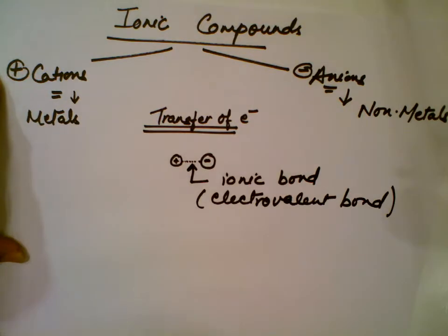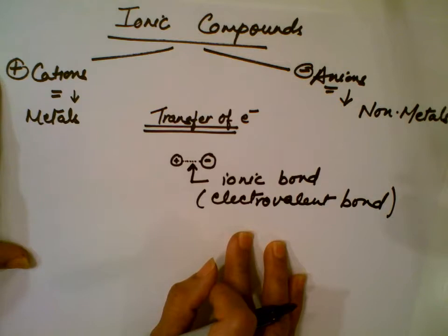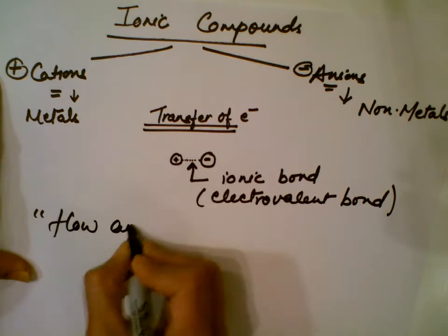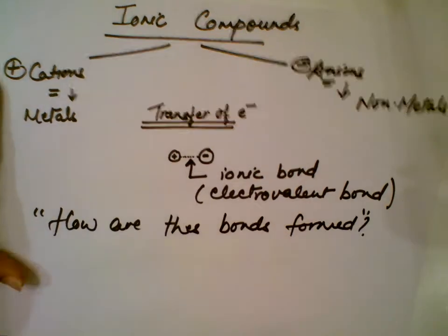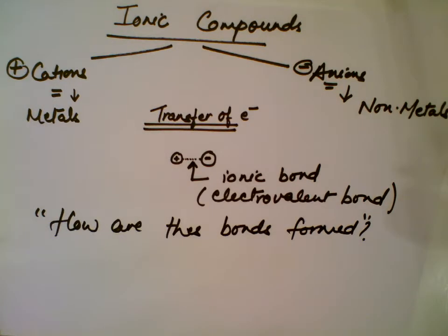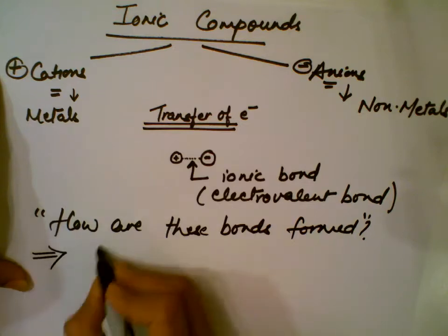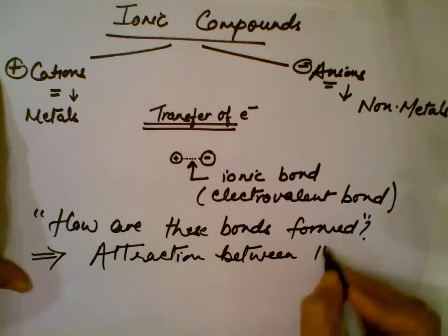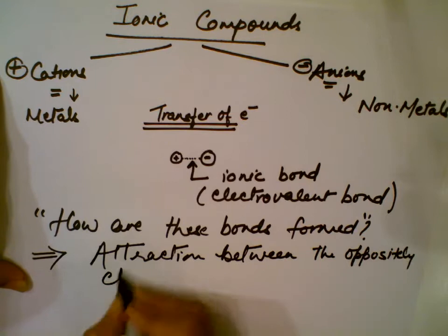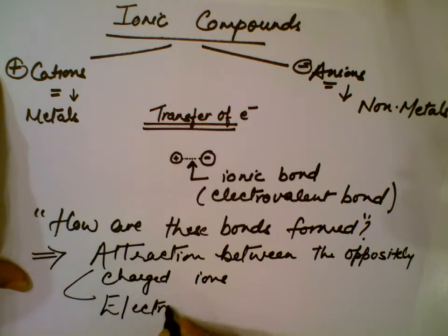How are these ions bonded, and what type of forces keep the atoms together? The bonds keeping them together are ionic bonds. This ionic bond is the result of electrostatic attraction between oppositely charged ions.